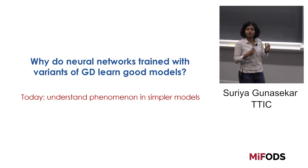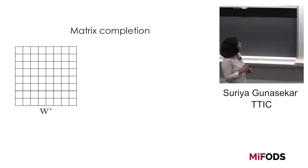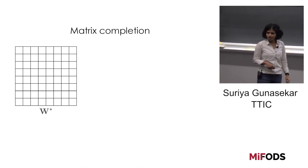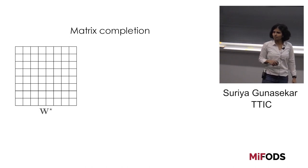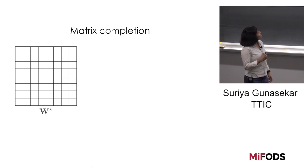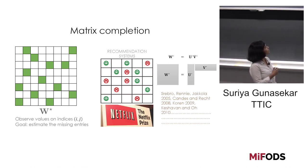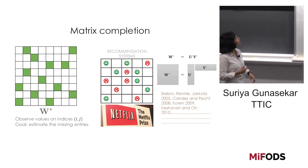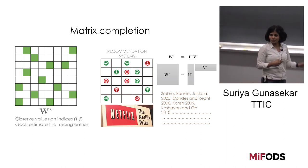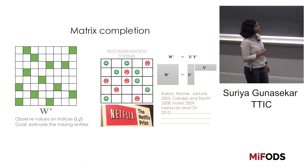These observations suggest that the algorithms used in optimization, like gradient descent, are key to learning good models rather than the optimization objective itself. We'll be looking at this phenomenon in much simpler models, including linear models and linear networks. Let's look at this in the problem of matrix completion: we have a ground truth matrix W*, we observe some entries, and the goal is to impute the missing entries. A pedagogical example is recommendation systems, popularized by the Netflix challenge, where the assumption is that the ground truth matrix is low rank.